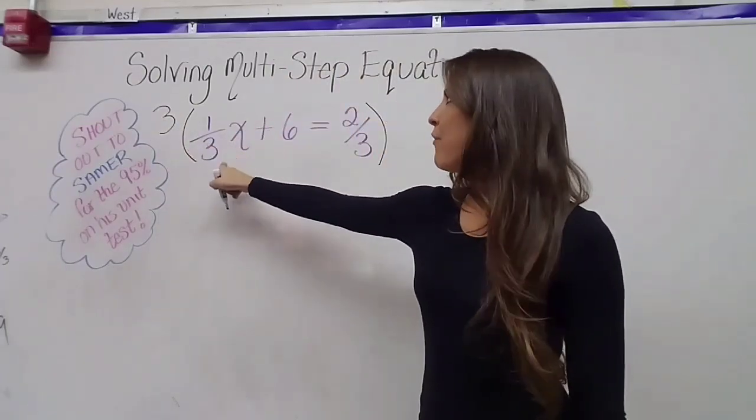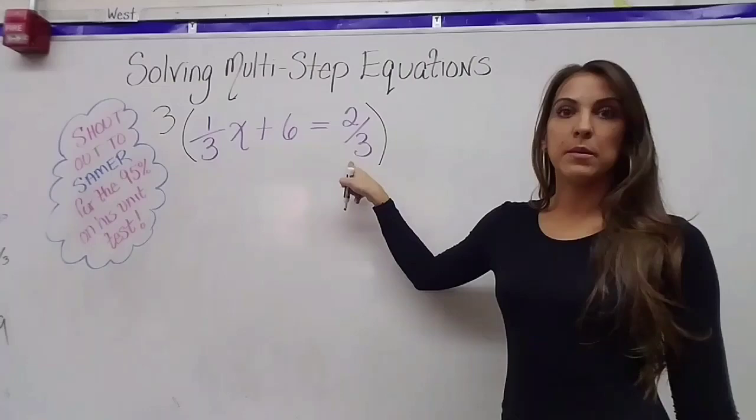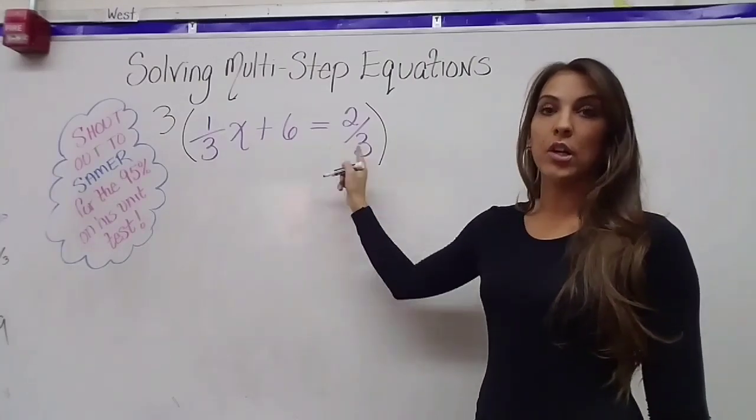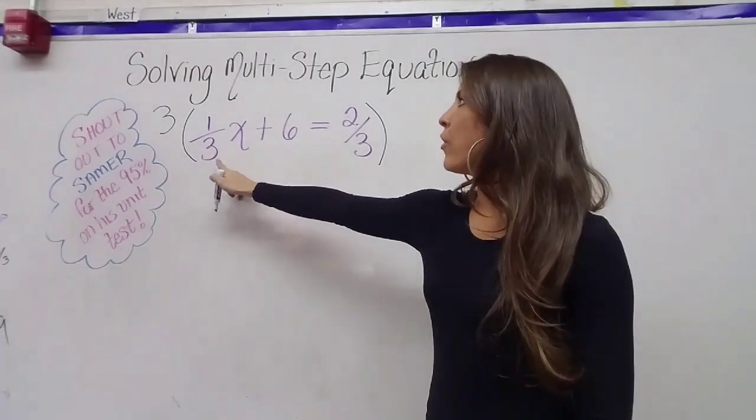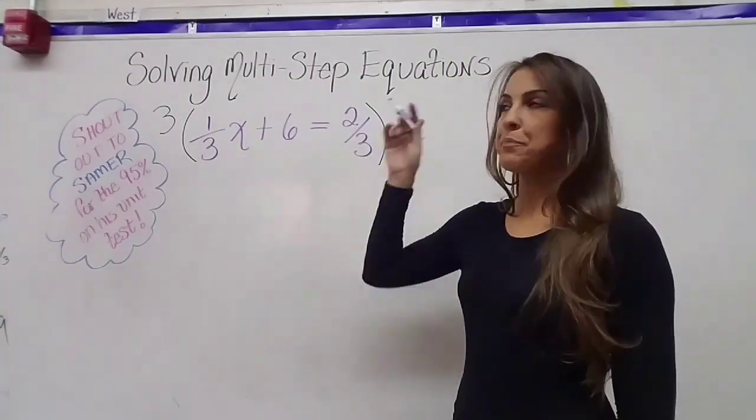Now what you have to remember is that every single term gets multiplied by three. There are three terms in this equation. Terms are separated by addition or subtraction. They'll all get multiplied by three.